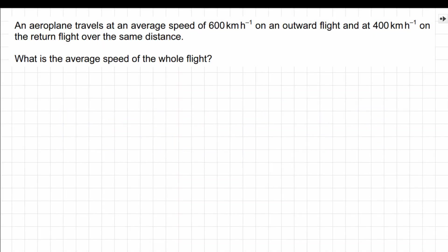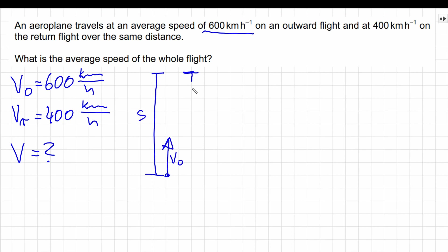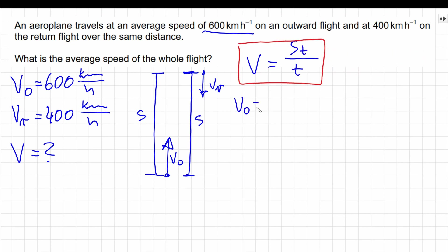On the outward journey, the aircraft is traveling at 600 kilometers per hour, and on the return journey, the aircraft is traveling at a speed of 400 kilometers per hour. We have to calculate the average speed. Let's draw the situation. On the outward journey, the aircraft is traveling with velocity V outward, and on the return journey with velocity V return. For the first section of the flight, V outward equals S divided by T outward, which allows us to calculate T outward.